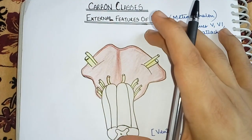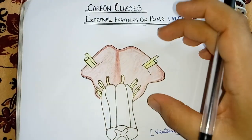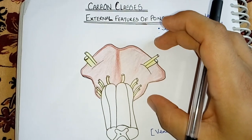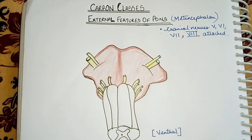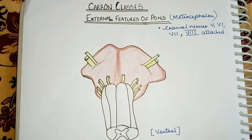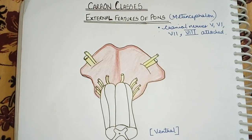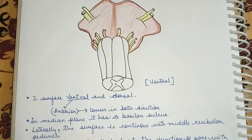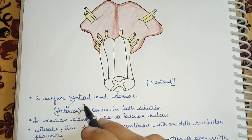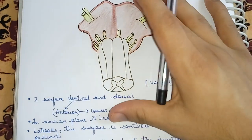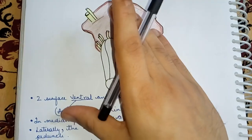The diagram I have drawn here is the ventral surface of the pons. So this is the ventral surface, and now we are going to study the points regarding the ventral surface. Friends, first of all, there are two surfaces — one is ventral and the other is dorsal. This one shown is the ventral surface; the dorsal is behind it.